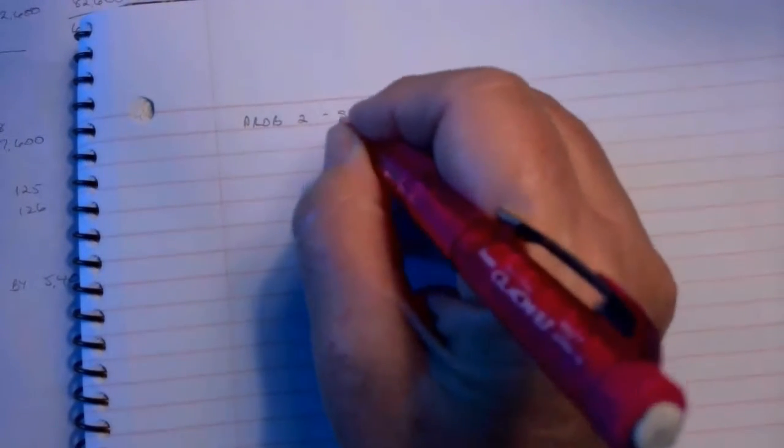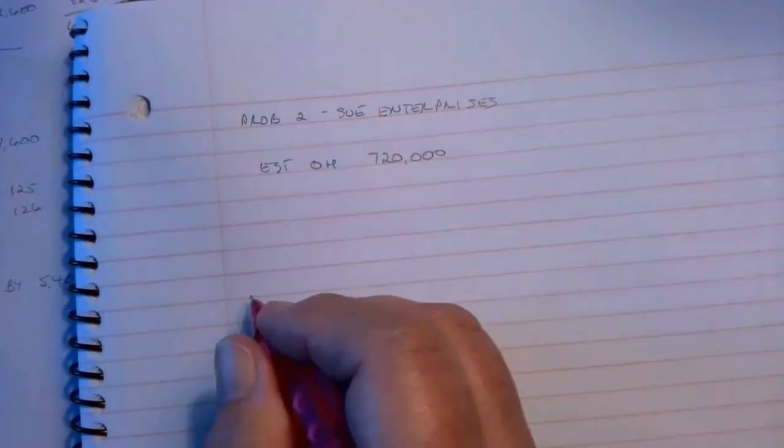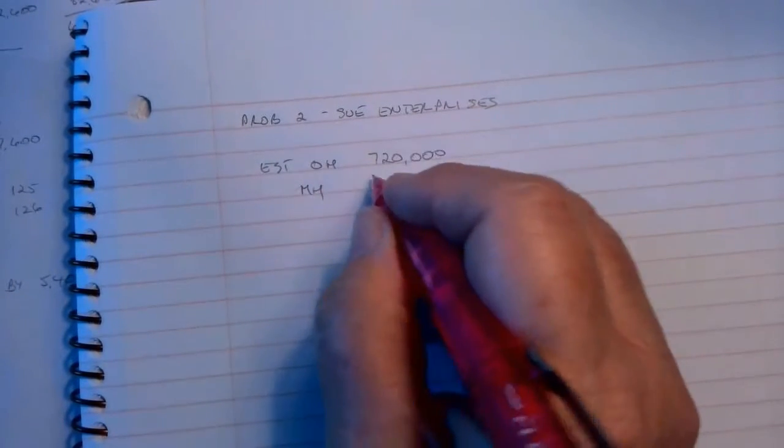Put this on the side. You should have this printed. The first thing we can do is figure out our overhead rate. This is Problem 2, Sue Enterprises. Our estimated overhead is $720,000 and the driver is machine hours, so our machine hours are 90,000.